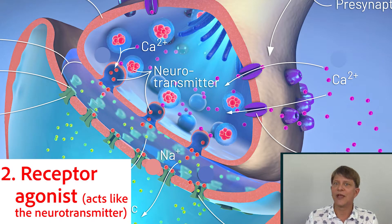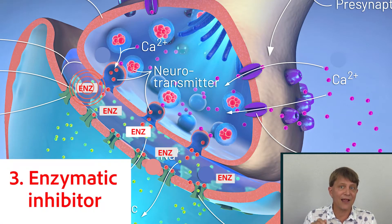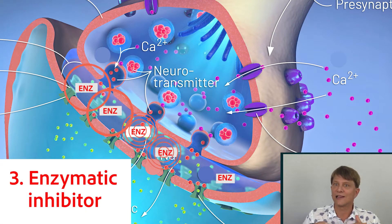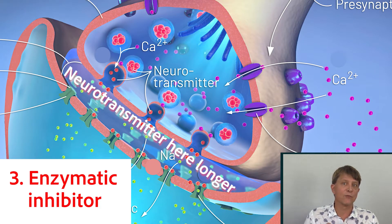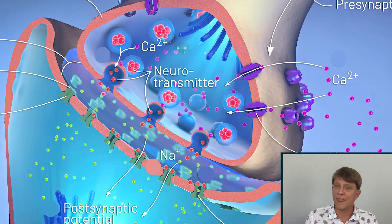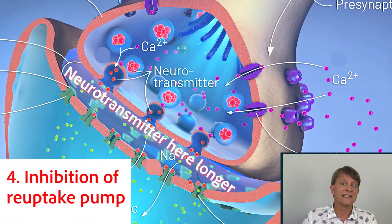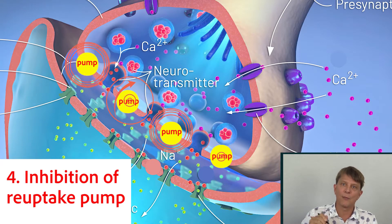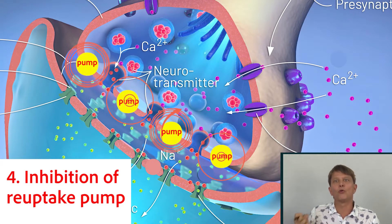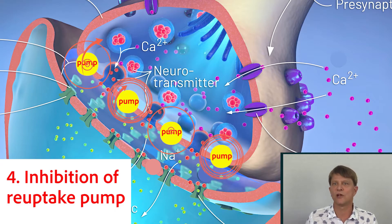Another mechanism is to affect the enzyme in the synaptic cleft by inhibiting it. If we inhibit the enzyme that breaks down the neurotransmitter, we end up with the neurotransmitter remaining in the synaptic cleft longer. Similarly, affecting the reuptake pump — the pump that pulls neurotransmitters back into the original cell — also results in the neurotransmitter staying in the synaptic cleft longer.